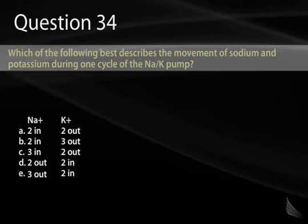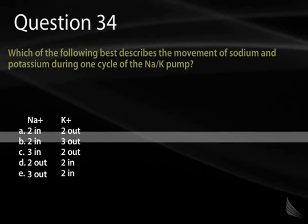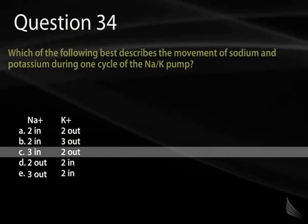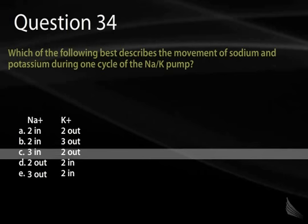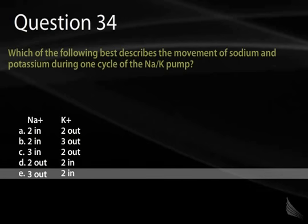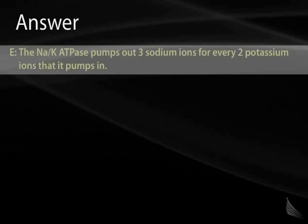Question 34. Which best describes the movement of sodium and potassium during one cycle of the sodium-potassium pump? A, two sodium in and two potassium out. B, two sodium in and three potassium out. C, three sodium in and two potassium out. D, two sodium out and two potassium in. Or E, three sodium out and two potassium in? This simply tests knowledge of the sodium-potassium ATPase. The correct answer is E: three molecules of sodium out for every two molecules of potassium brought in.